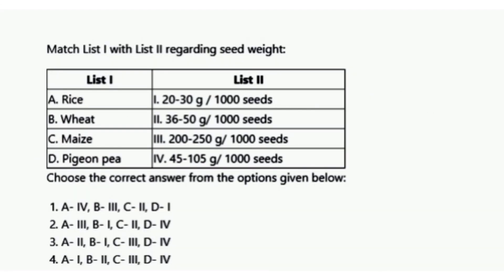The next and last question is to match List 1 — rice, wheat, maize, and pea — with List 2 regarding seed weight: 20 to 30 grams per thousand seeds, 36 to 50 grams per thousand seeds, 200 to 250 grams per thousand seeds, and 45 to 105 grams per thousand seeds. The correct answer is option 4: rice 20 to 30 g, wheat 36 to 50 g, maize 200 to 250 g, and pea 45 to 105 grams per thousand seeds.